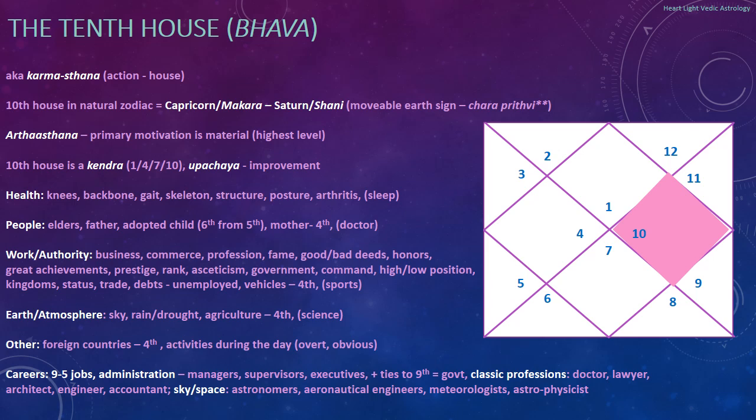Metaphoric careers: nine-to-five jobs, the corporate lifestyle, and administrators — managers, supervisors, executives. If there are ties to the 9th house (10th lord going to the 9th, or 9th lord going to the 10th, or Parivartana), this might involve government and classic professions such as doctor, lawyer, architect, engineer, and accountant. In traditional societies, parents tend to encourage children toward these careers because of their steadiness, especially if the family has seen financial difficulties in the past — these career types tend to always have job openings.